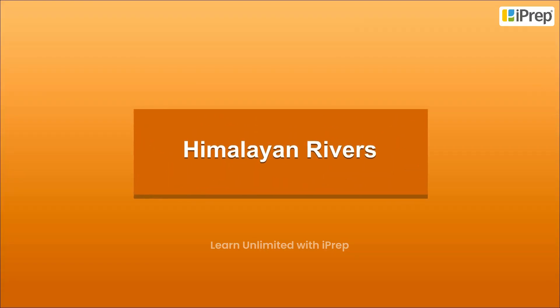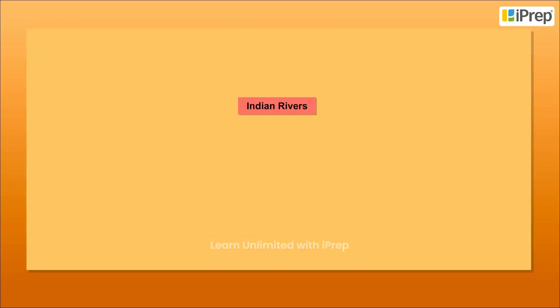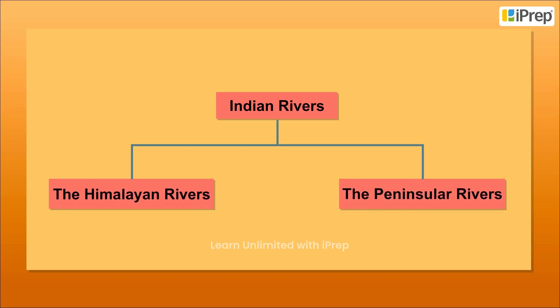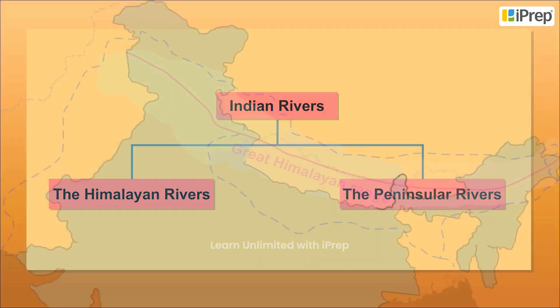Himalayan rivers. The Indian rivers are divided into two major groups: 1. The Himalayan rivers, and 2. The Peninsular rivers.